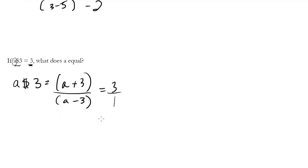Let's imagine that's over 1. I'll cross-multiply. I get a + 3 = 3a - 9. Do a little rearranging: I get 2a = 12. So a is 6.